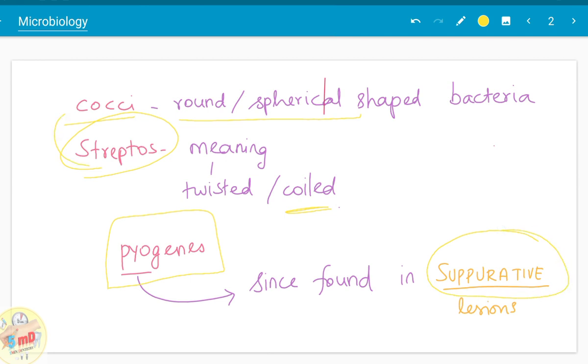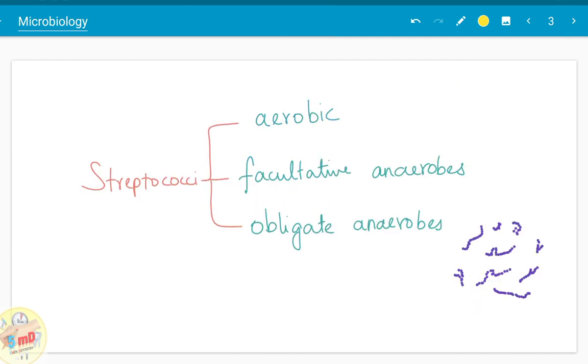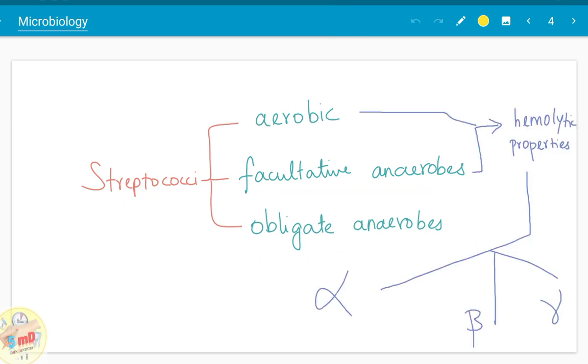Therefore the name Streptococci pyogenes. The family of Streptococci bacteria are either aerobic, facultative anaerobes, or obligate anaerobes. Among these classified bacteria, aerobic and facultative anaerobes alone have hemolytic properties. Based on the hemolytic properties we have alpha, beta, and gamma bacteria.